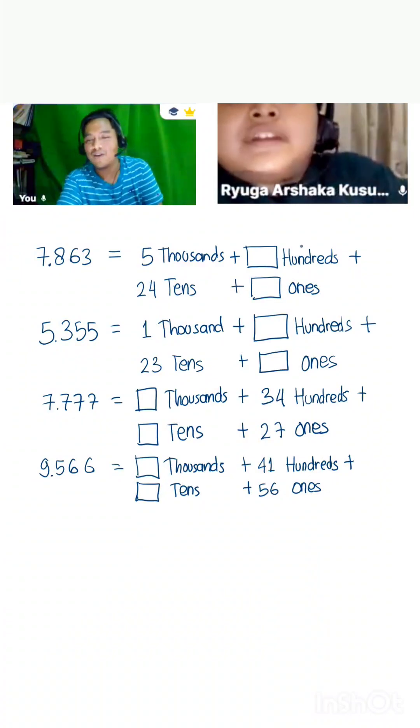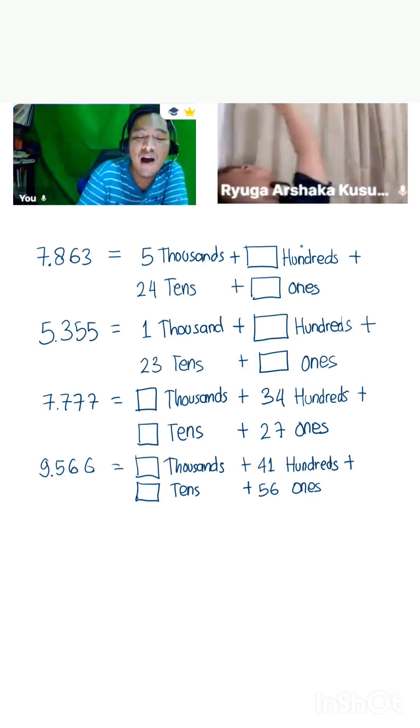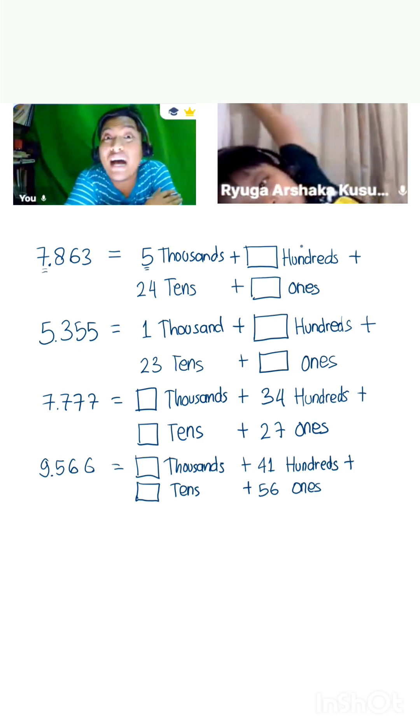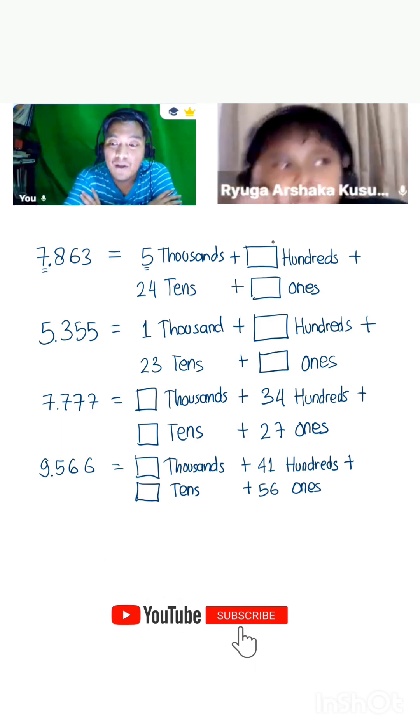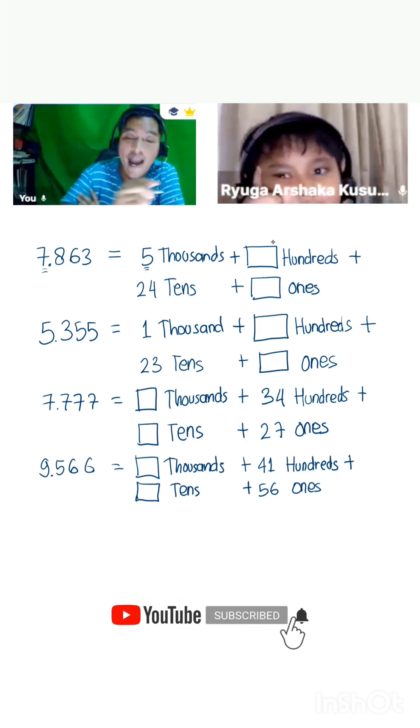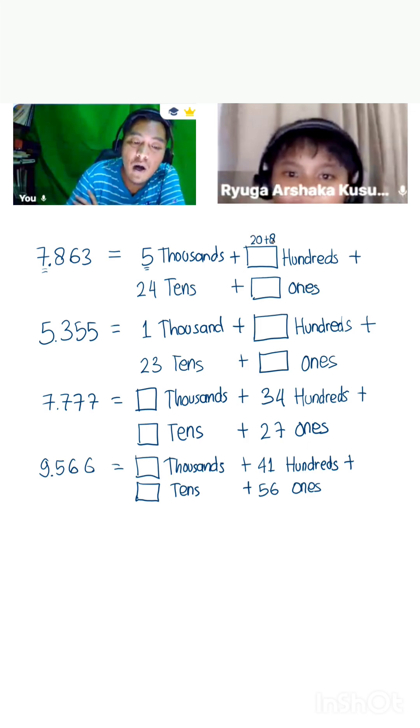What makes you feel confused about this problem? These many things, okay. We have five in thousands. How many more thousands do we need here? Twenty-eight. Okay, remember that it's 20 plus 8, but you know we have...